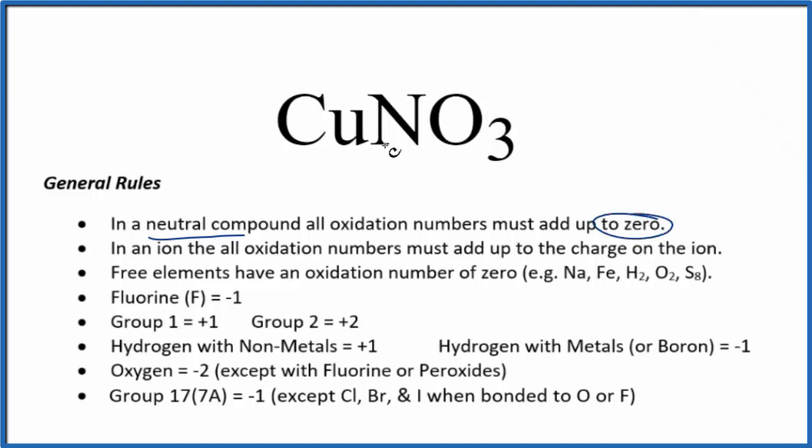It's important to recognize here that this NO3 is considered the nitrate ion and always has a charge of 1 minus. So we have this nitrate ion here, and when we have ions, the oxidation numbers add up to the charge on the ion. So the N and the three oxygens will all add up to 1 minus.